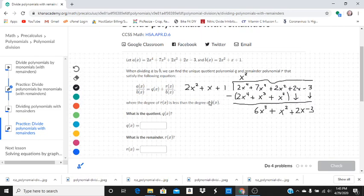Now we have to ask ourselves, how many times does 2x squared go into 6x cubed? Or what do we have to multiply 2x squared by to get 6x cubed? Well, if I multiply it by 3x, I'm going to get 6x cubed.